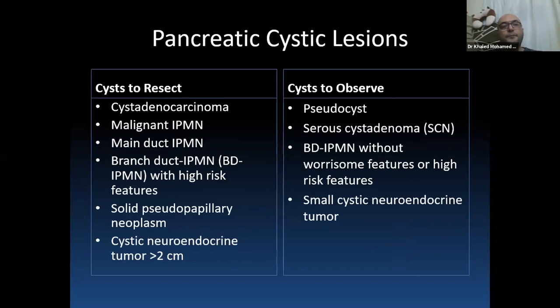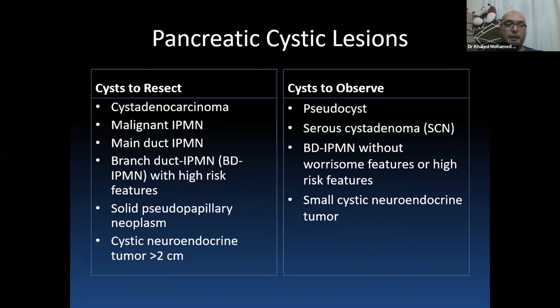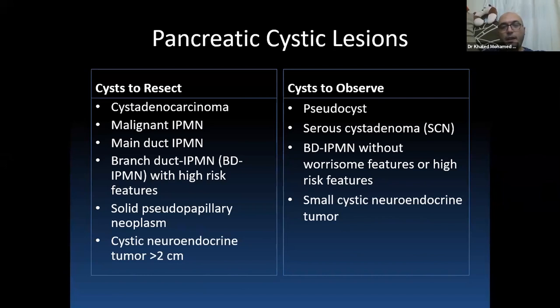Some cysts should be resected, such as cystadenocarcinoma, malignant IPMN especially main duct IPMN, branch duct IPMN with high-risk stigmata, solid pseudopapillary neoplasm, and cystic neuroendocrine tumor more than 2 cm. Cysts to observe include pseudocysts, serous cystadenoma, branch duct IPMN without high-risk features, and small cystic neuroendocrine tumors less than 1 cm or between 1 and 2 cm.